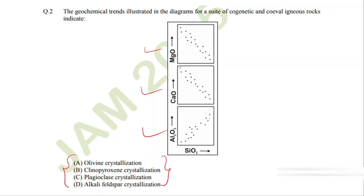This is an MSQ question, so more than one might be correct. We just saw that MgO is showing a decreasing trend, calcium oxide is also showing a decreasing trend, but in initial stages alumina does not decrease; rather it increases. What might it suggest?